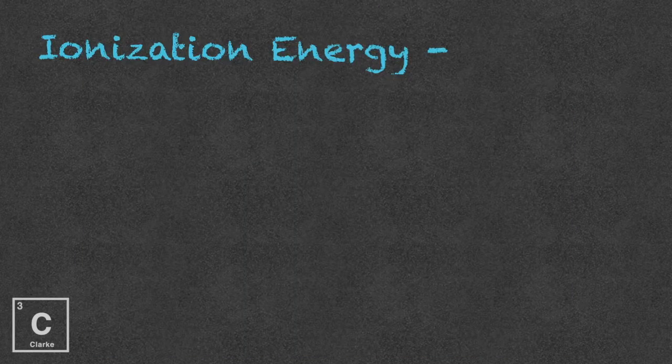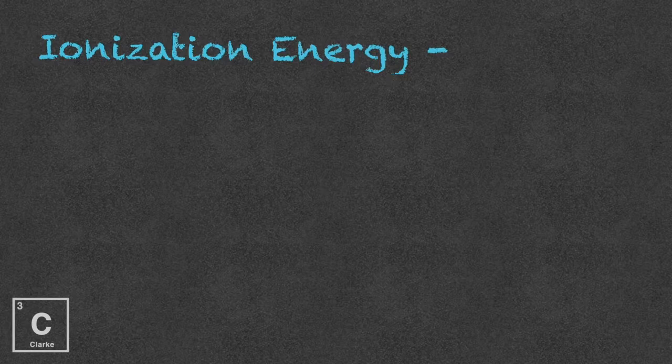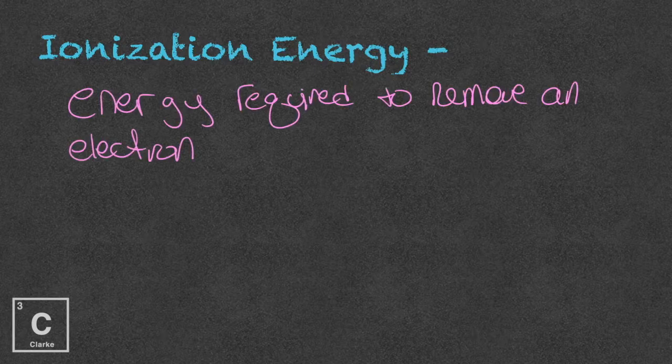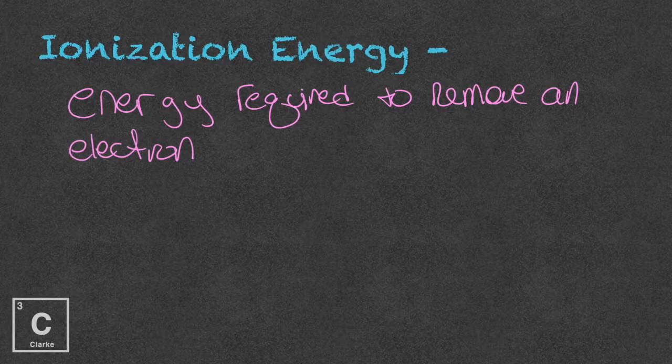So let's remember what ionization energy is. Ionization energy is the energy required to remove an electron — let's write that down. When this electron is being removed, the substance is in the gaseous state.